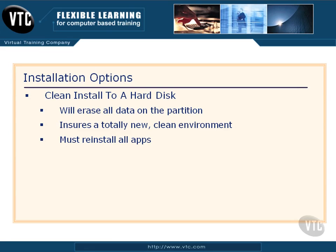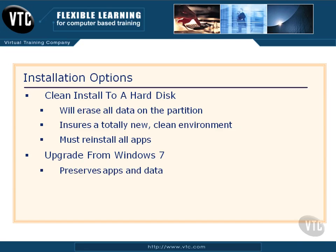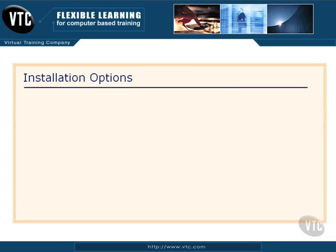You can upgrade from Windows 7, and this will preserve your apps and data. I'd refer you to Microsoft.com for specific information on upgrading and what versions you can upgrade from and to, but the general rule is: if you have a legal copy of Windows 7 and buy a legal copy of Windows 8, you shouldn't have any problems. It replaces the Windows 7 OS files with Windows 8, and puts old Windows 7 files you might need in a folder called Windows Old.